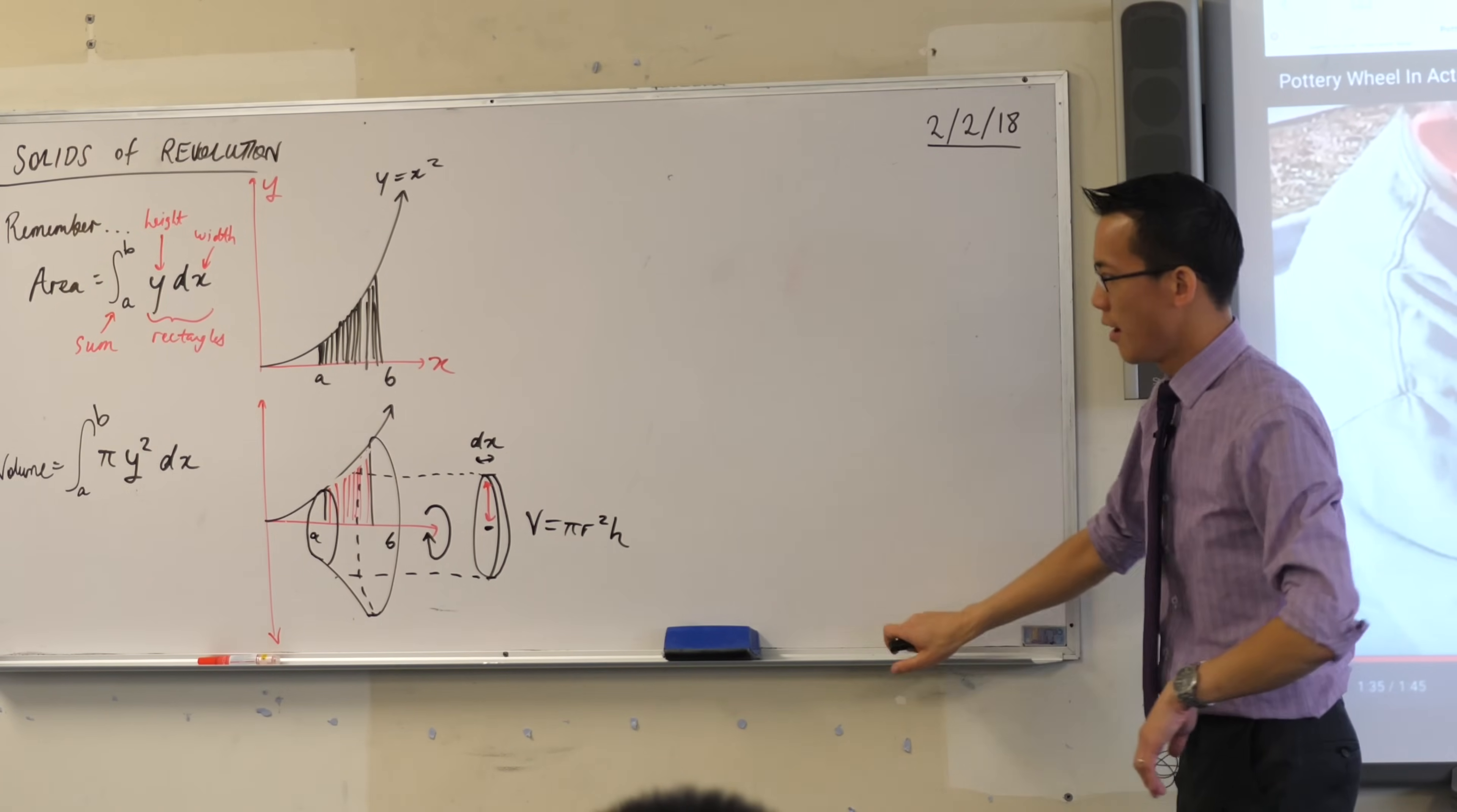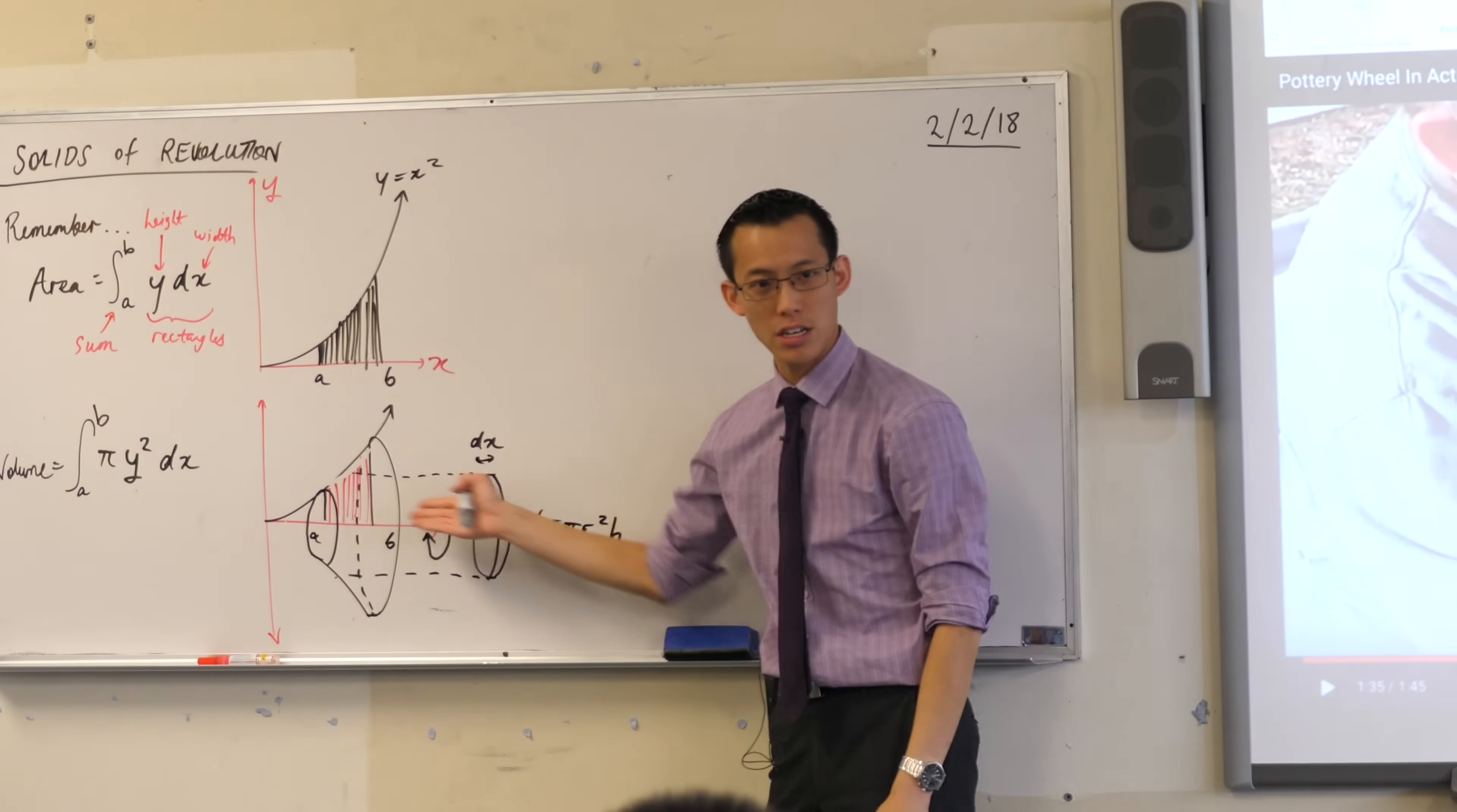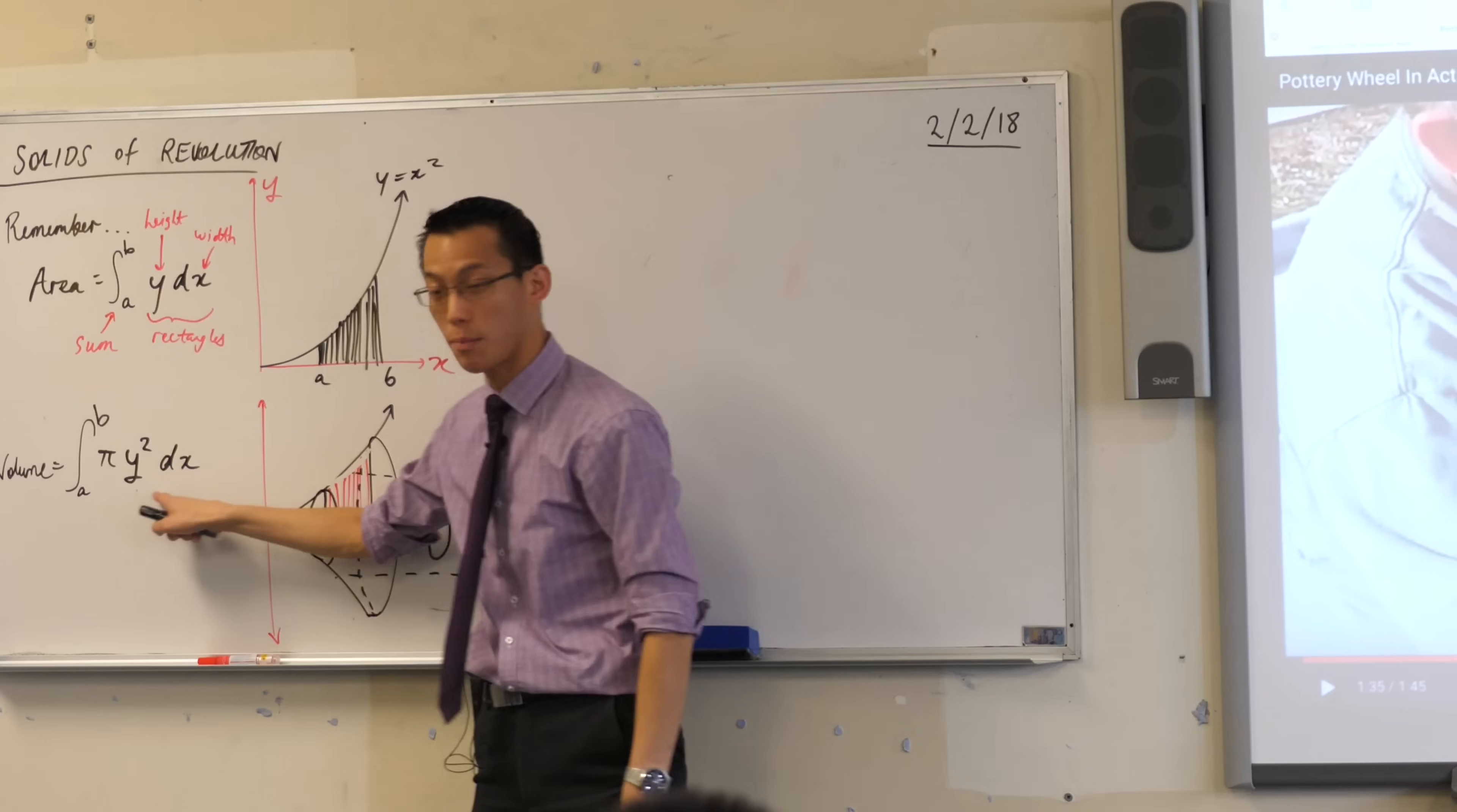This is the formula for the volume of a solid of revolution. Bit of a mouthful. But I want you to remember what this is. What are you adding up? Well, this 3D shape is basically made of a whole bunch of cylinders. So just add up a whole bunch of cylinders.